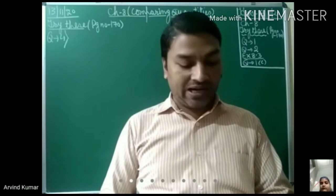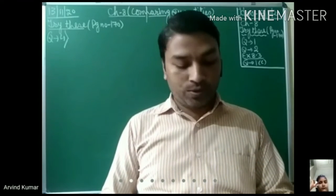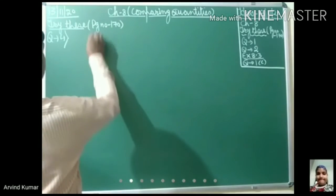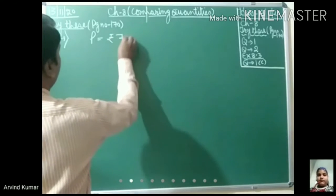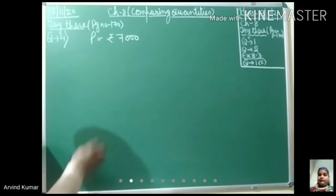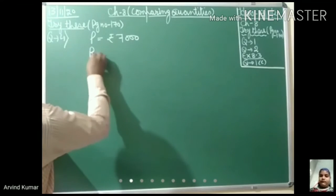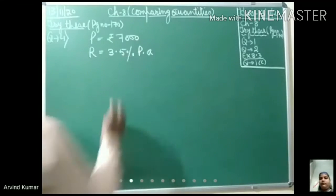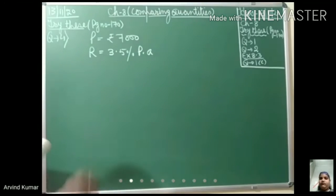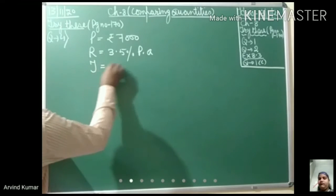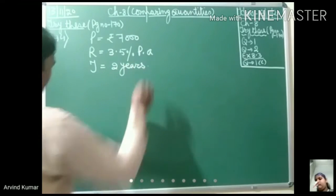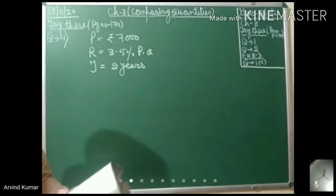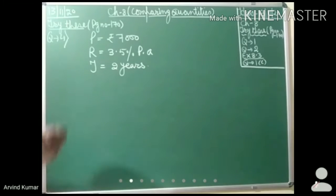So what is given here? The principal amount is rupees 7,000. Rate of interest is equal to 3.5% per annum. And the time period is 2 years. We have to calculate the amount to be paid at the end of the second year.